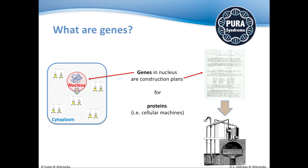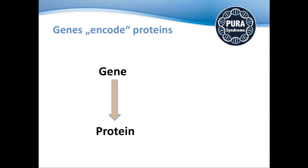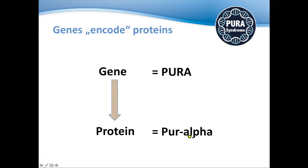The genes encode the proteins. For PURA Alpha, this means the gene is called PURA, and the protein is called PURA Alpha. The best way to remember this is by looking at the PURA Foundation logo — you see PURA written and it's encircled by DNA, a double helix. So when you're not sure which is which, look at the logo: PURA is encircled by DNA, and then you're sure.